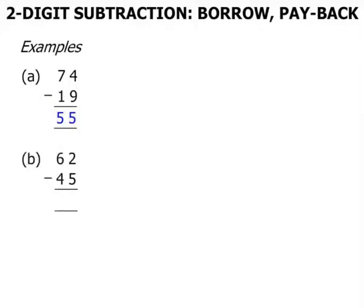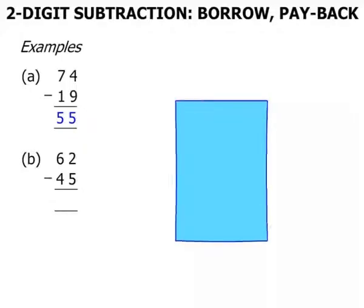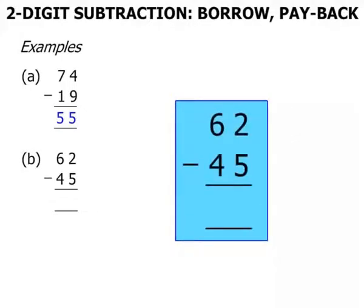Terrific. The next one, 62 minus 45. Let's rewrite the question there. We have 2 minus 5. Can't do that.